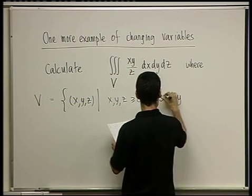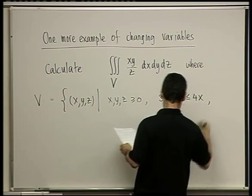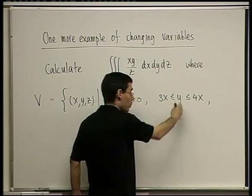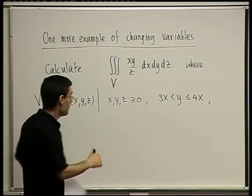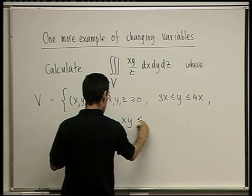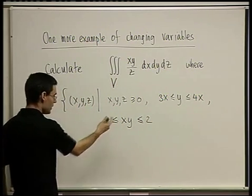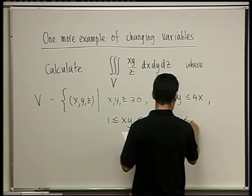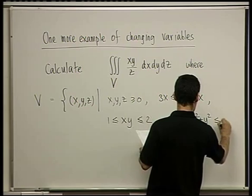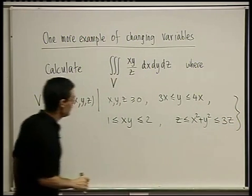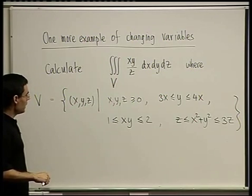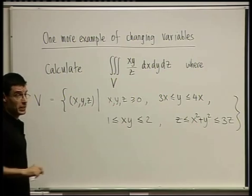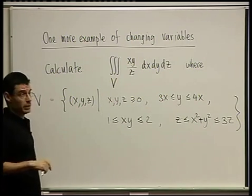Y is between 3x and 4x. This looks good for starters — it means it's heading for a simple domain; y is between two functions of x. But then I'm adding that xy is between 1 and 2. That's intertwining x and y again, so it's not clear how this is going to develop. And finally, z is less than or equal to x squared plus y squared, which in turn is less than or equal to 3z. Looking at this, it needs deciphering. Let's decipher it.